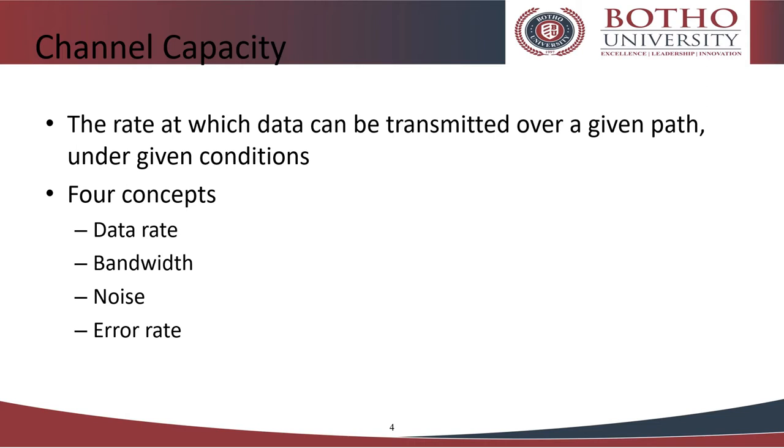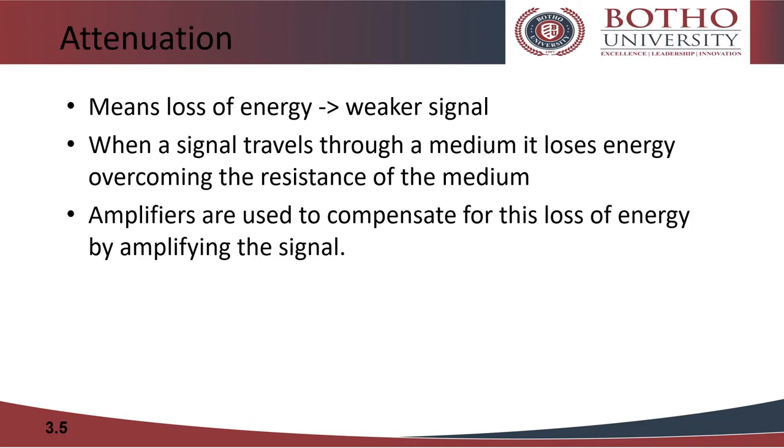Attenuation is the loss of signal strength in networking cables or connections. An amplifier is an electronic device that increases the voltage, current, or power of a signal.